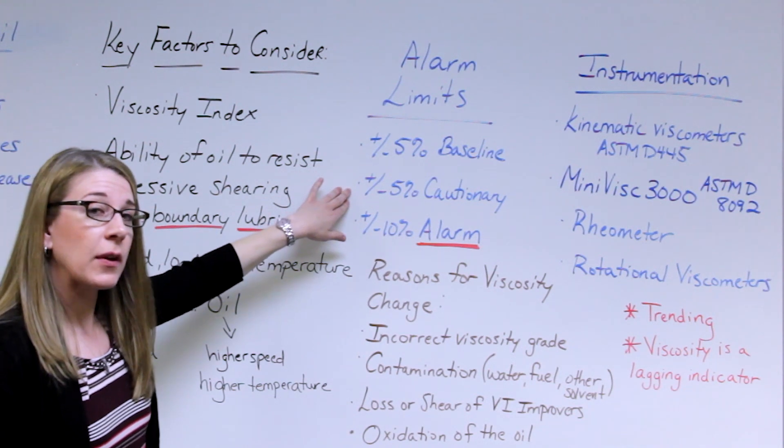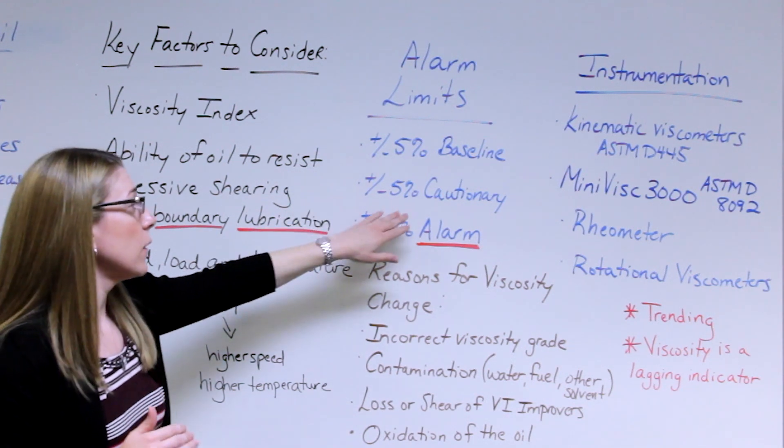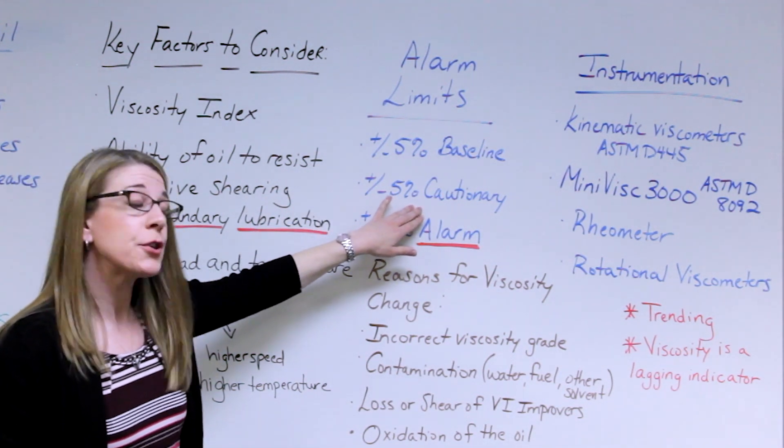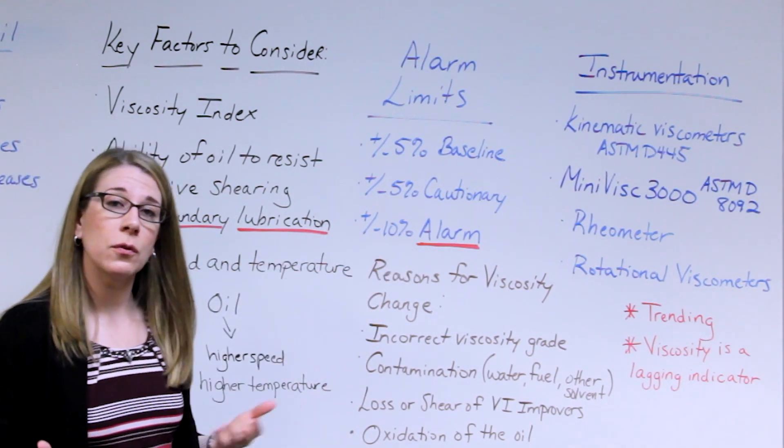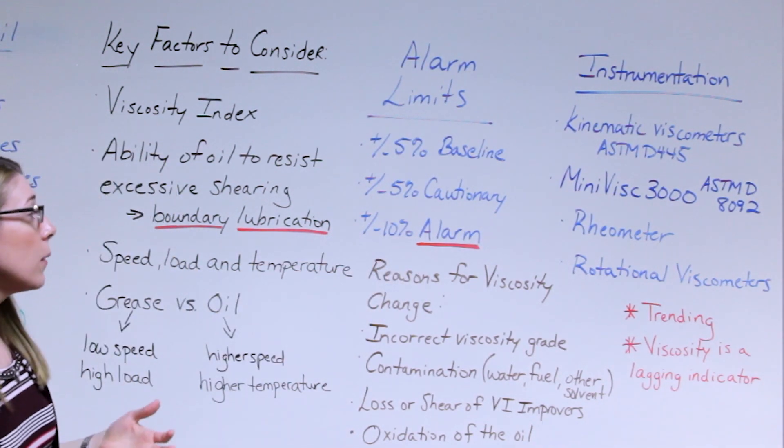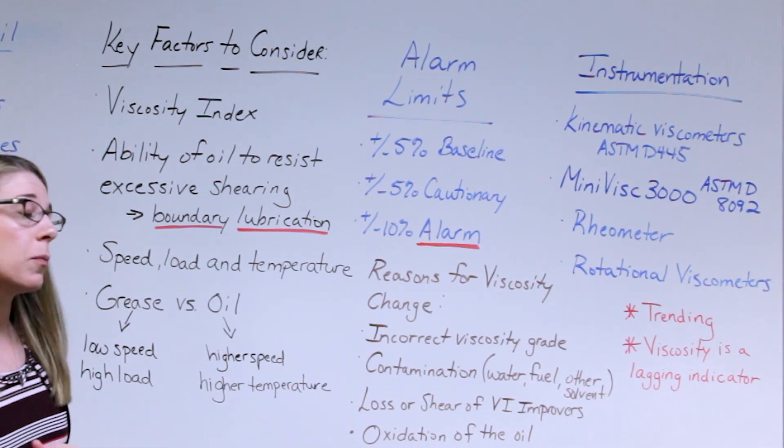Typically plus or minus five percent of that baseline value we can consider cautionary, basically just watch. And plus or minus ten percent we're going to alarm that. Those are some good guidelines. You can move those around a little bit but those are good places to start.